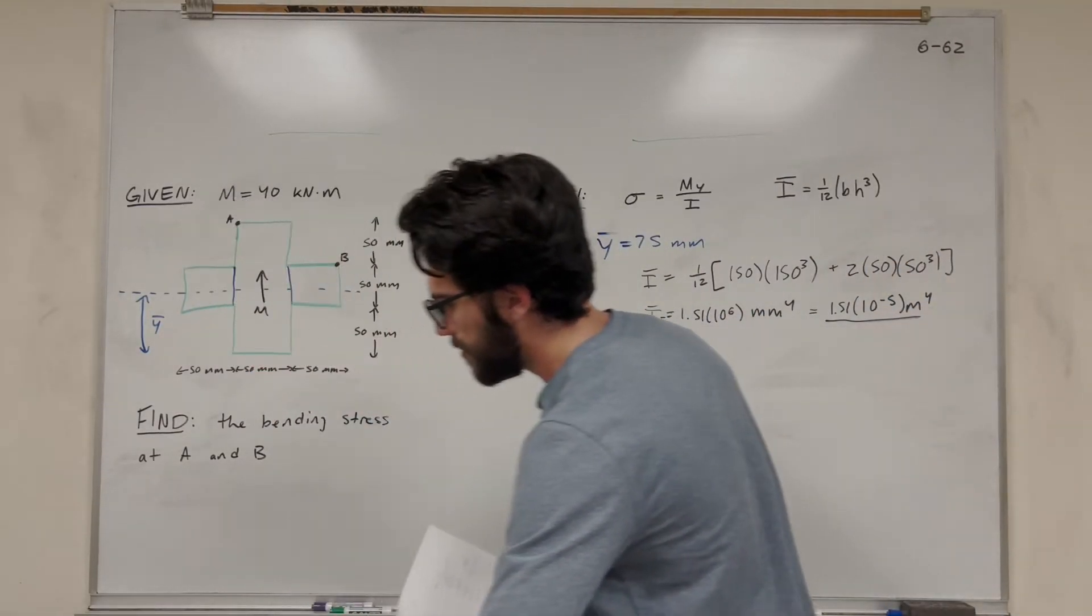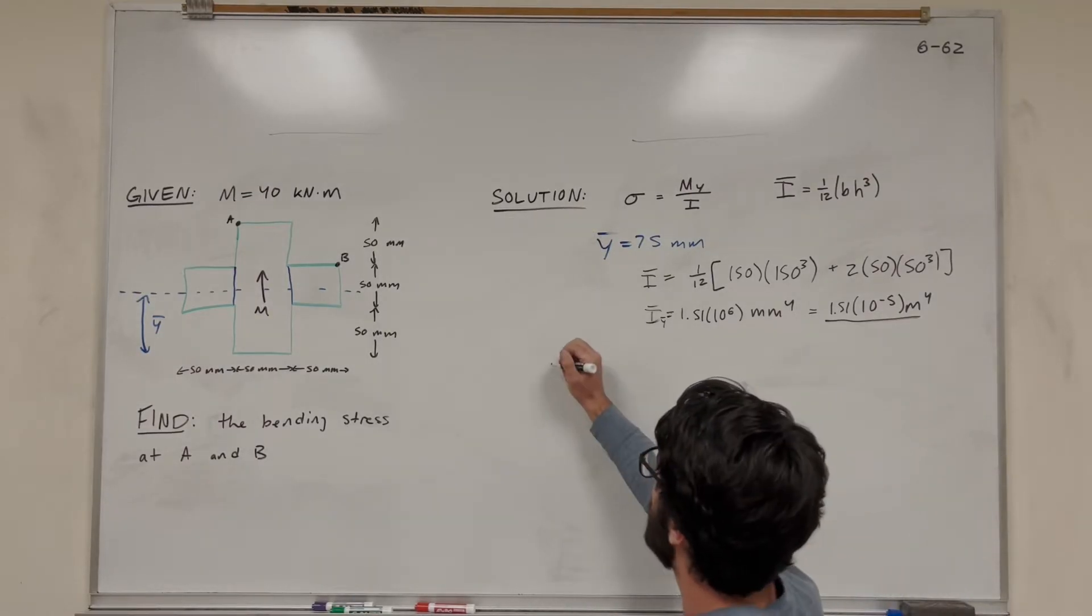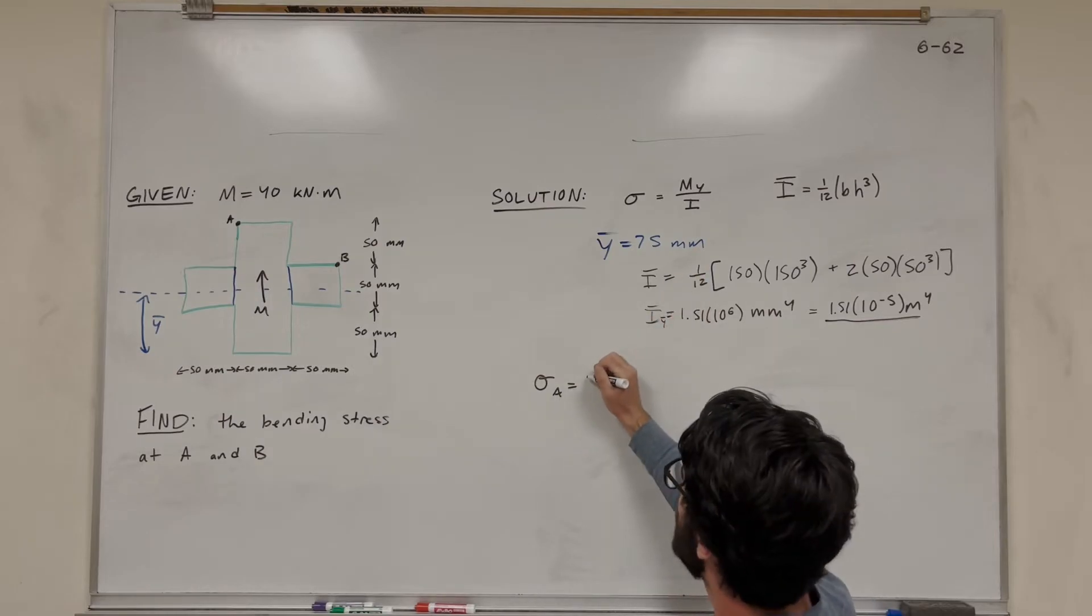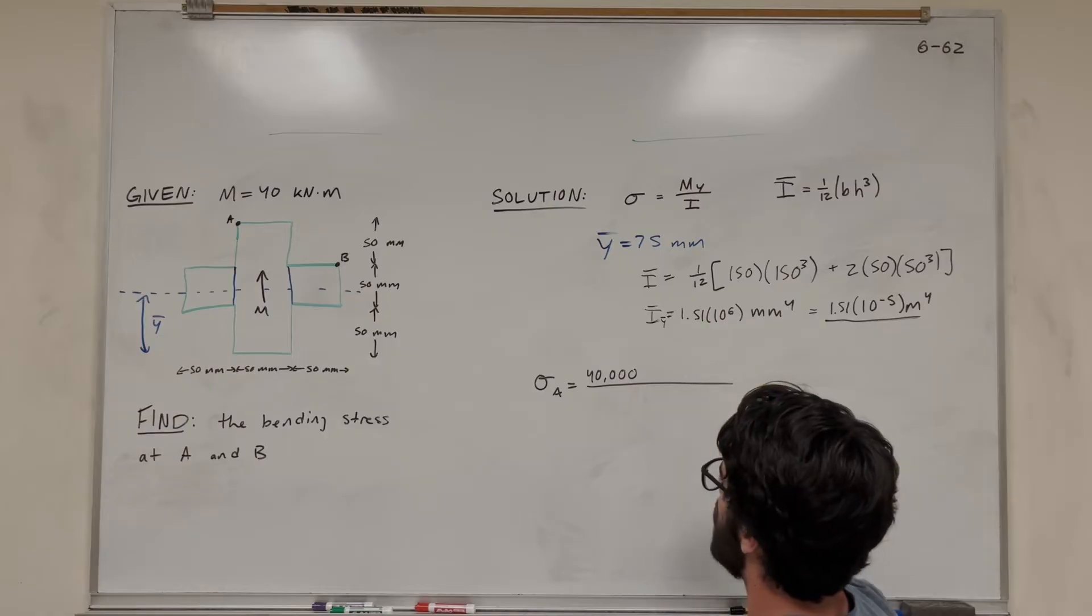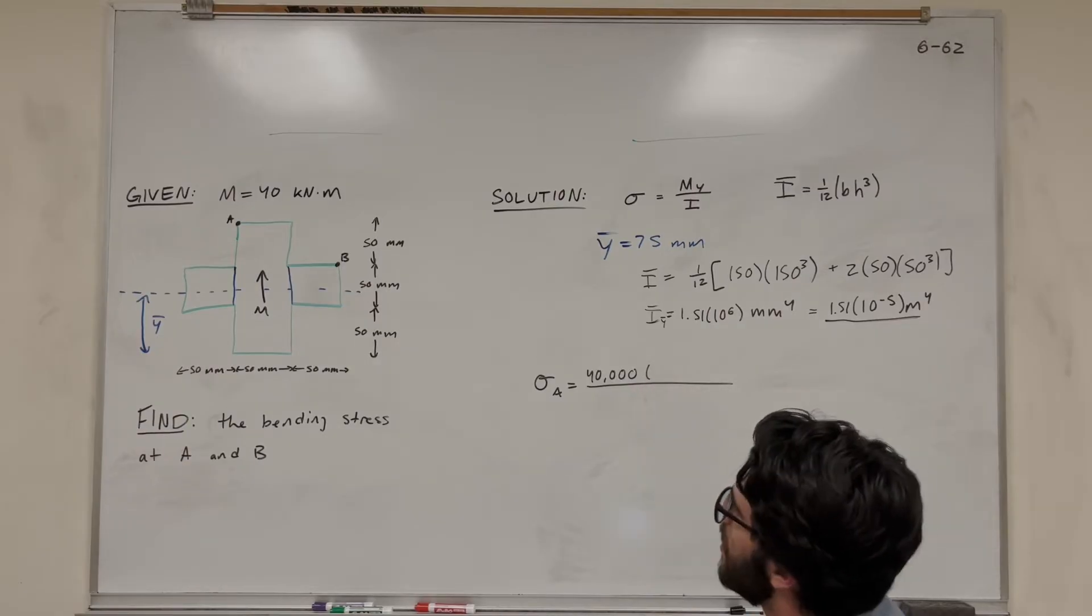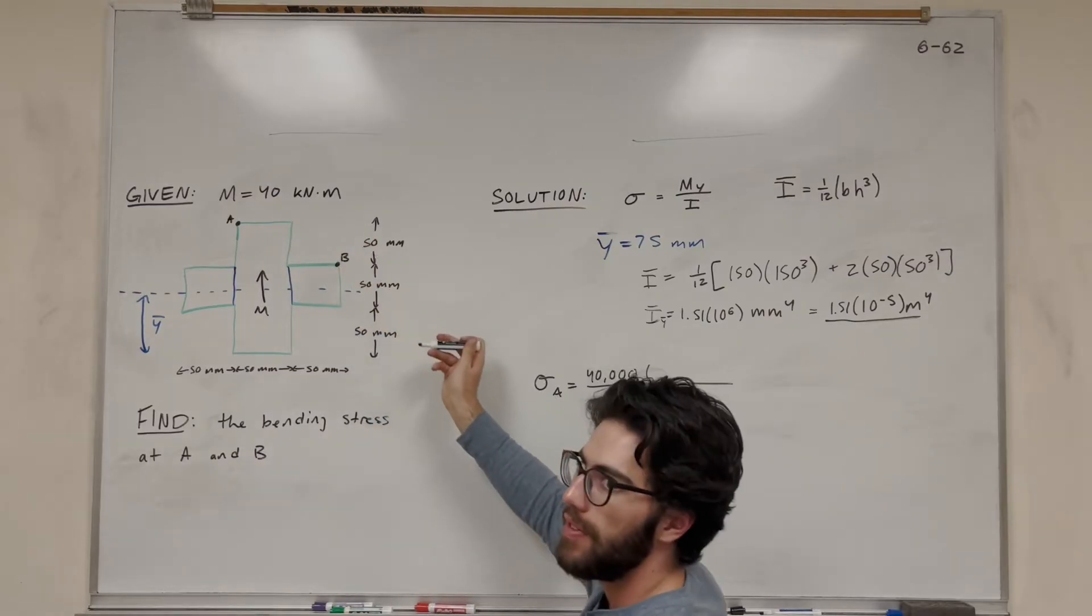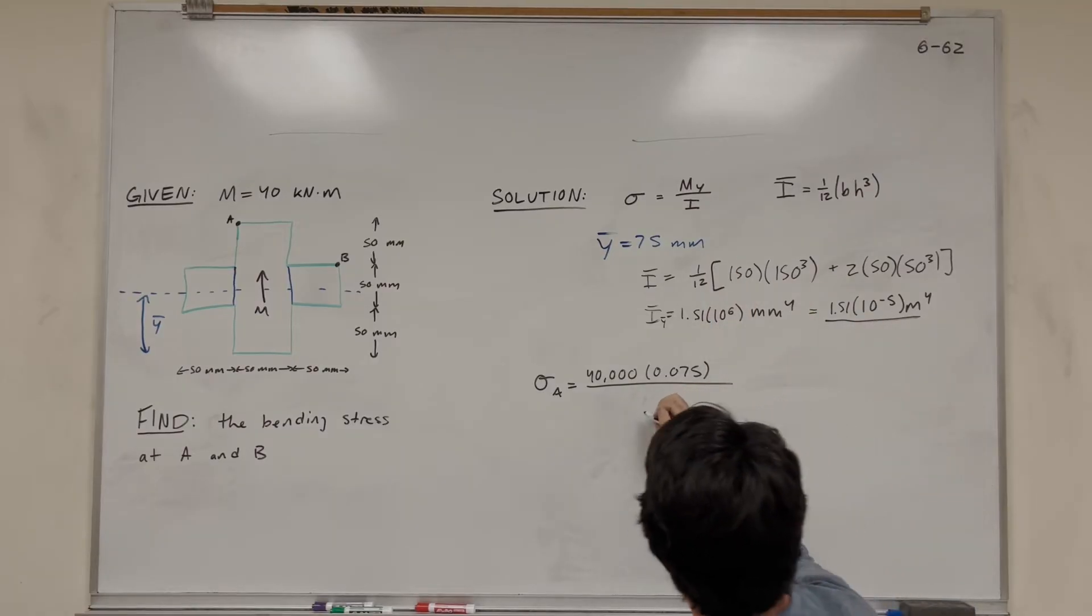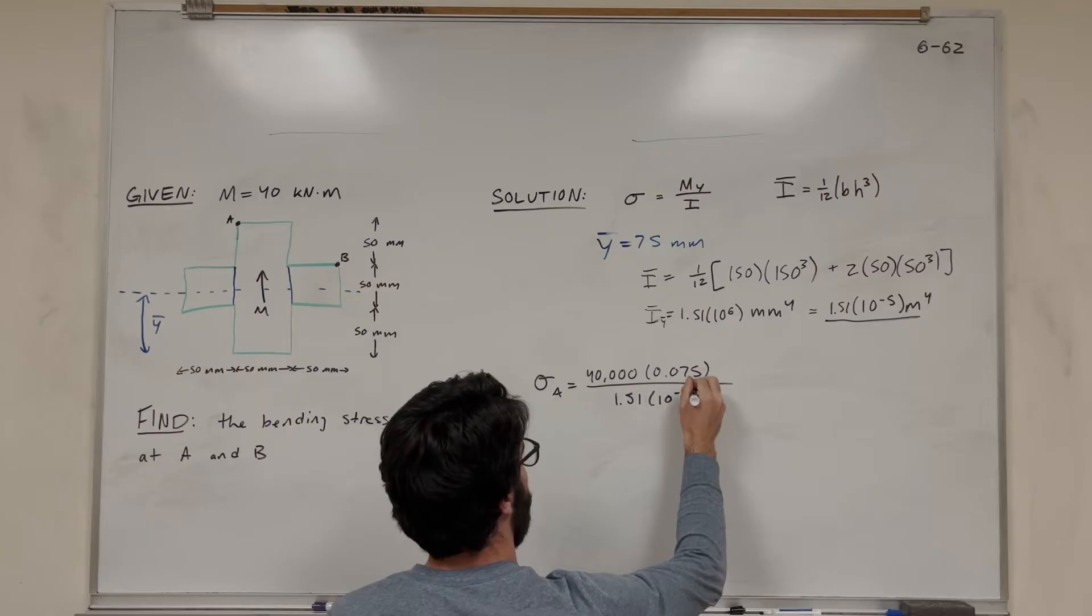So now what we have to do is plug it in. We have two points to plug it into. Let's start with point A. So the bending stress at A is equal to moment, which is 40 kilonewtons, so we're going to do 40,000 just to get it into normal units. Then Y is the distance from here to A, so that's going to be 75 millimeters, so 0.075. And then I is just going to be what we just solved, 1.51 times 10 to the negative 5.